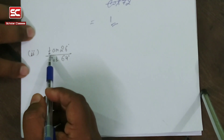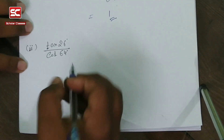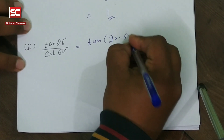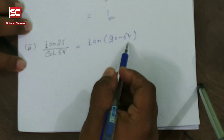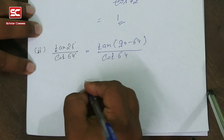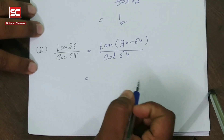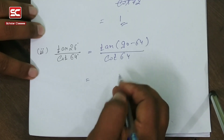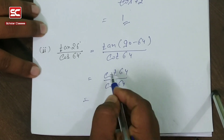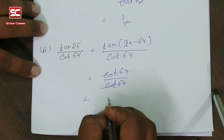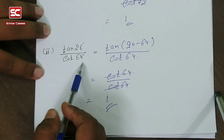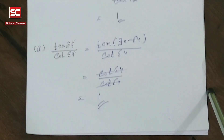Now come to the second part of the question. Here we find tan 26 divided by cot 64. We write tan 26 as tan(90 minus 64). We know that tan(90 minus theta) is equal to cot theta, so tan(90 minus 64) is equal to cot 64. cot 64 divided by cot 64 cancels, and the final value of tan 26 divided by cot 64 is equal to 1.